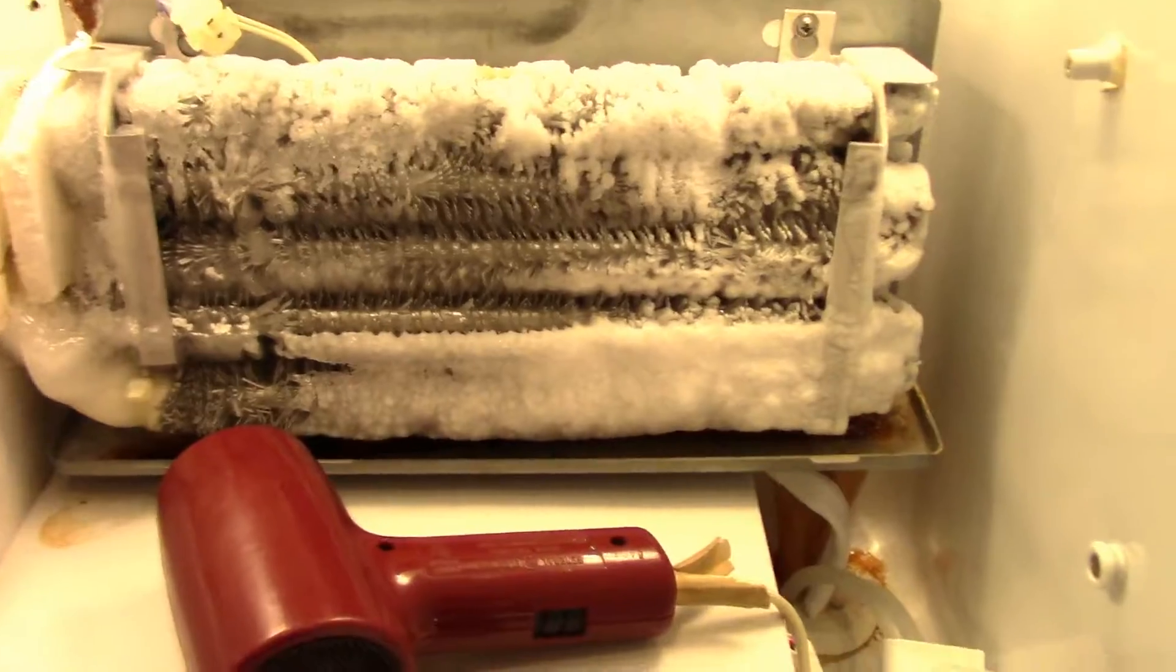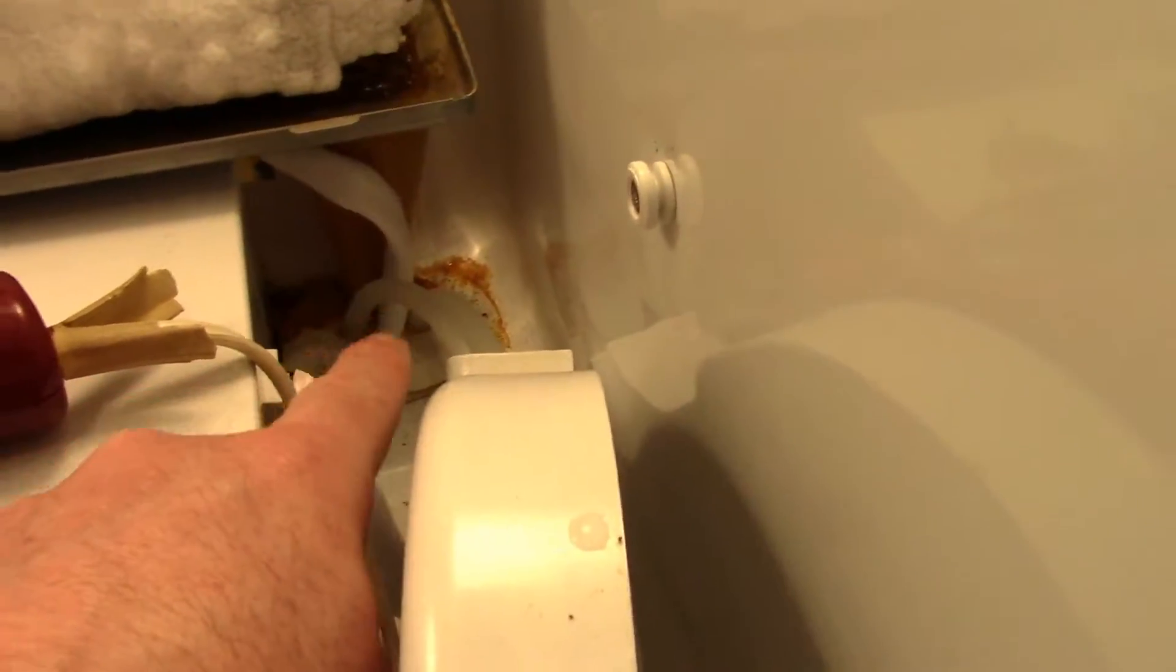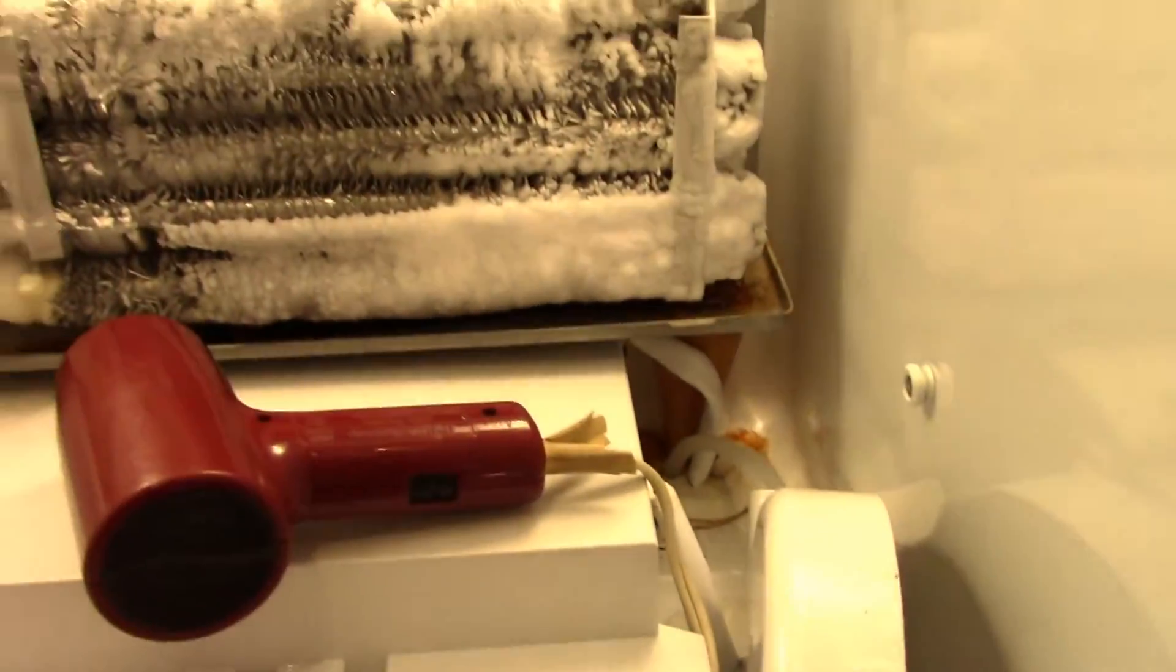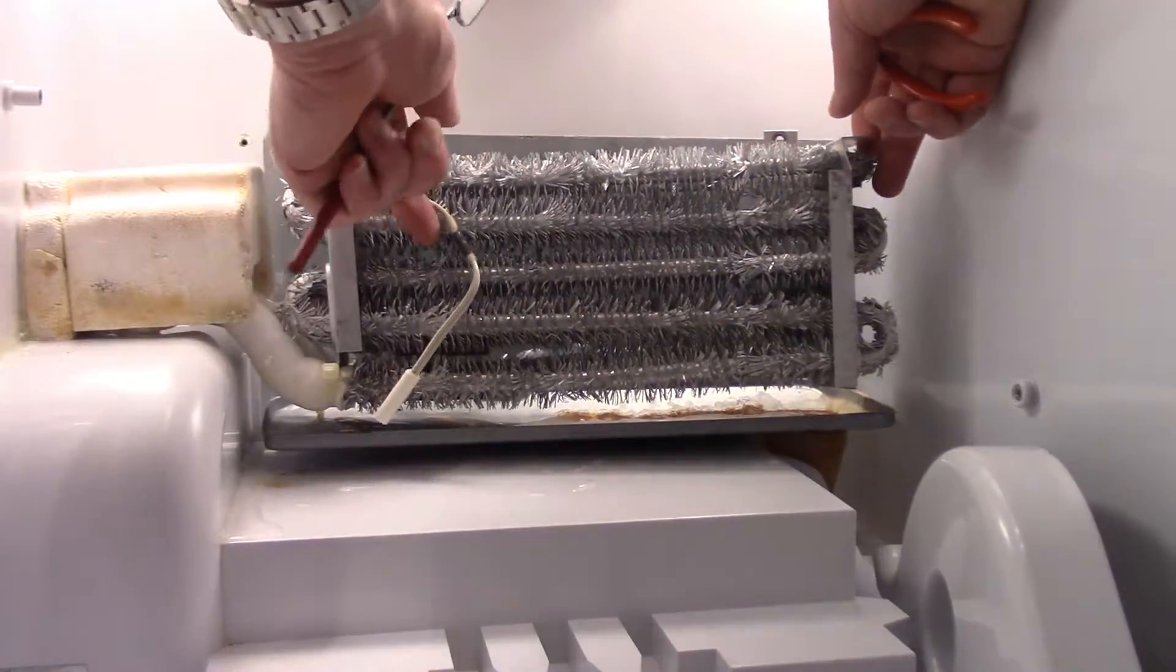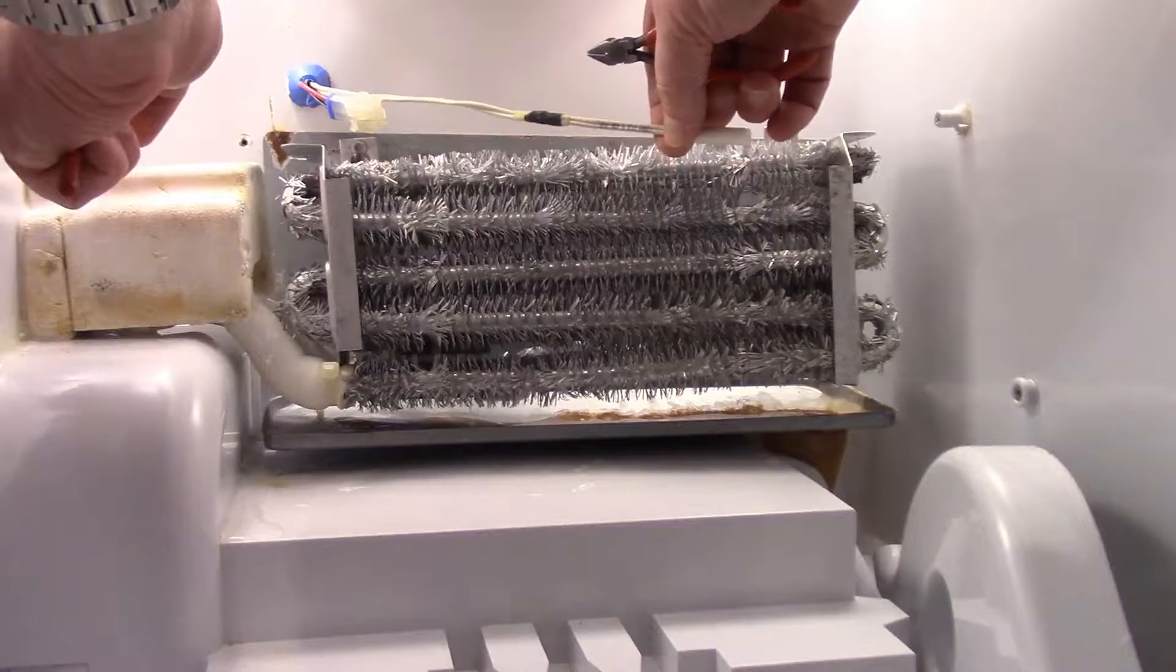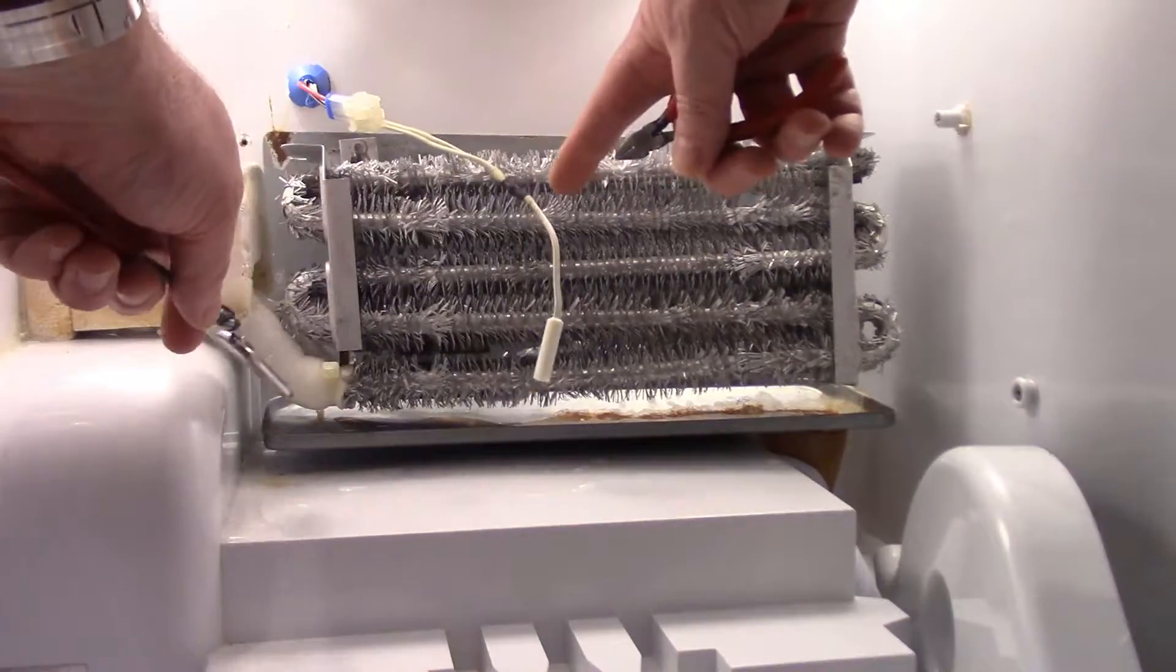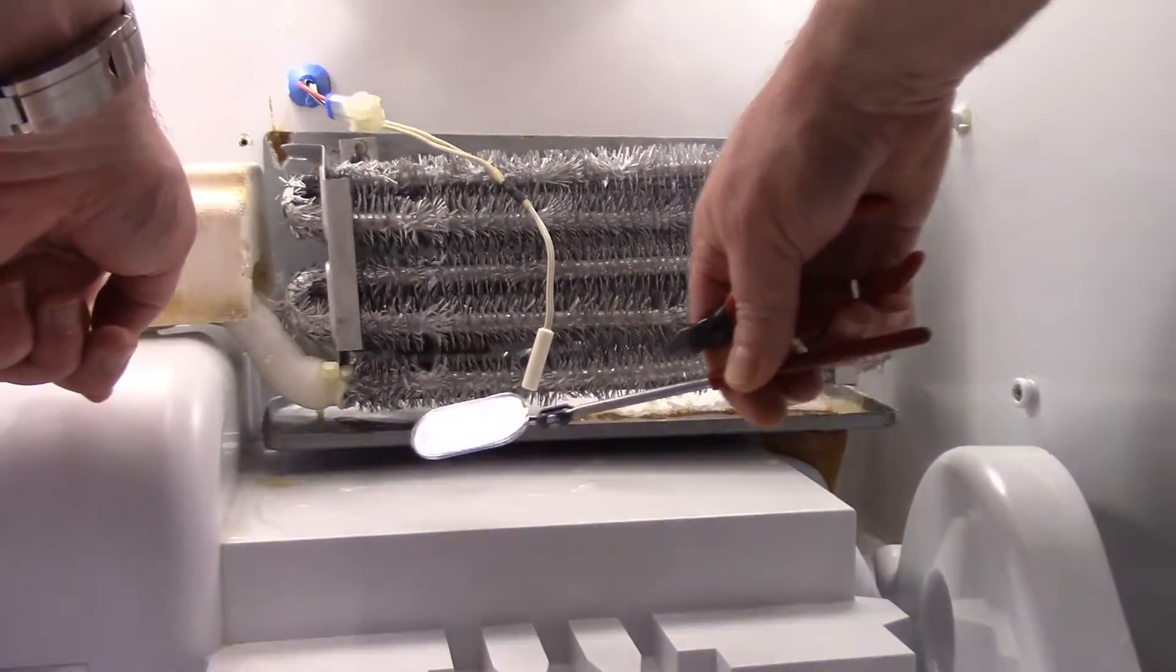So if you're wondering where all this water goes, it drips down to this tray and goes through this funnel down into a tray underneath the condenser. I gotta tell you that took a long time to thaw out even with the hairdryer. At any rate, here is the temperature sensor for the evaporator. It goes in a little hole at the back here.